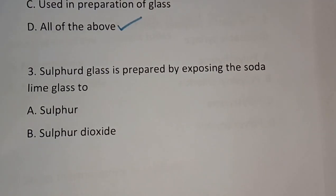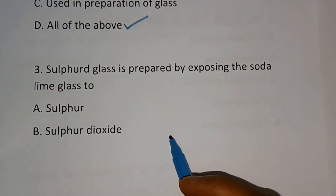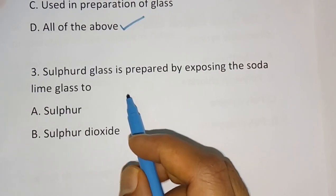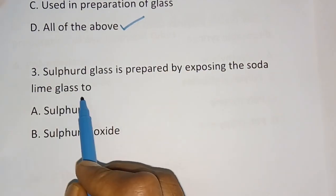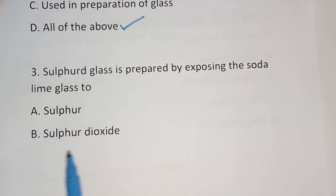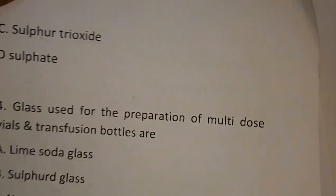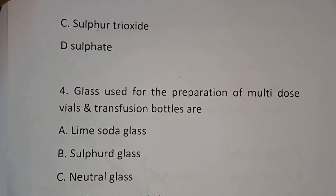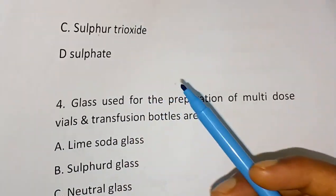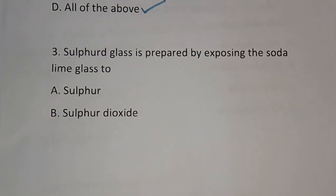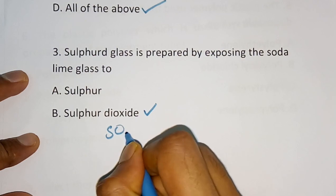Question number 3: Sulphur glass is prepared by exposing soda lime glass to — options are sulfur, sulfur dioxide, sulfur trioxide, or sulfate. The correct answer is sulfur dioxide.